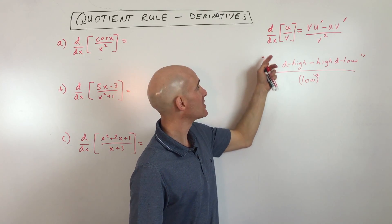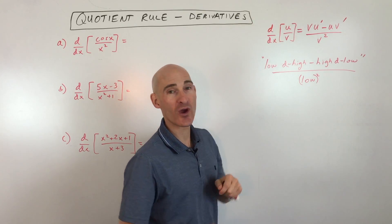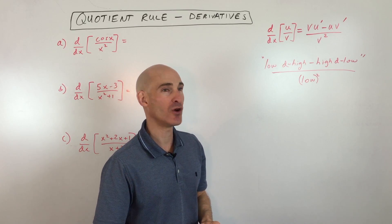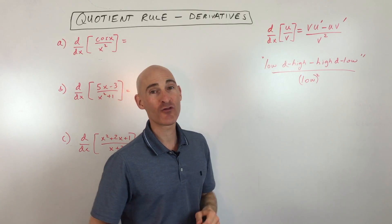So let's just say that again. It's low D high minus high D low over the square of what's below. Low D high minus high D low over the square of what's below.